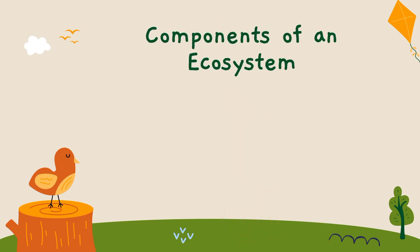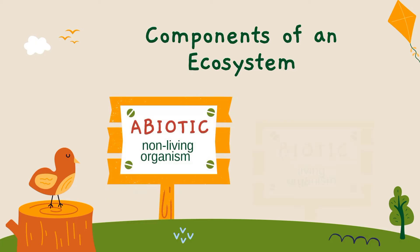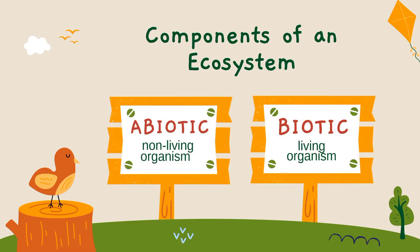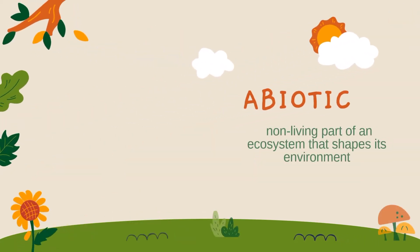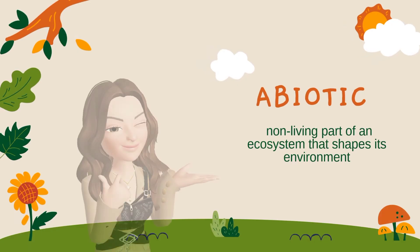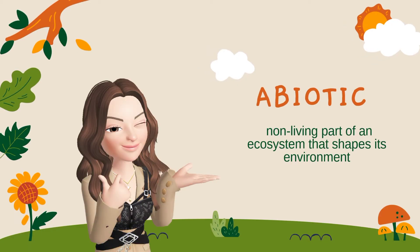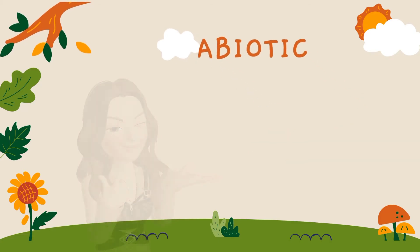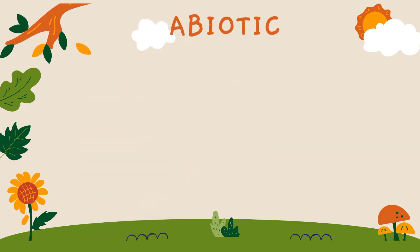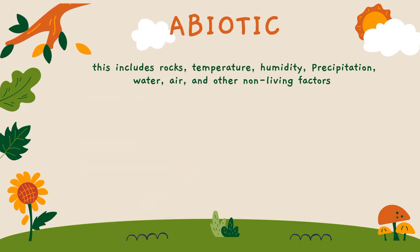There are two components of an ecosystem: abiotic and biotic factors. When we say abiotic factors, these are the non-living part of an ecosystem that shapes its environment. These are the non-living, physical and chemical factors that influence an ecosystem.